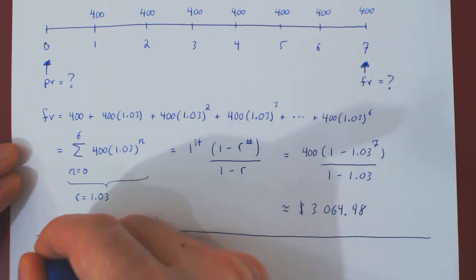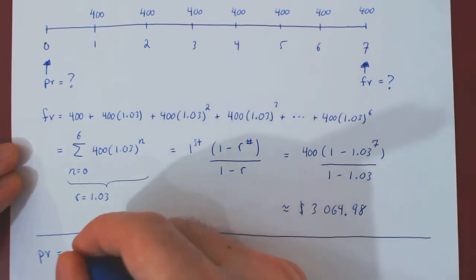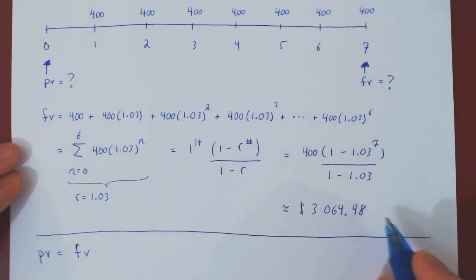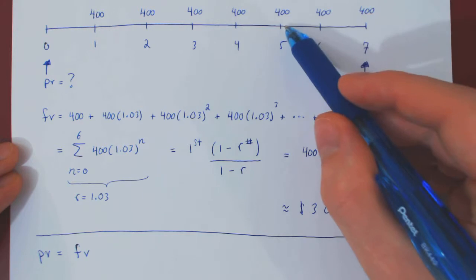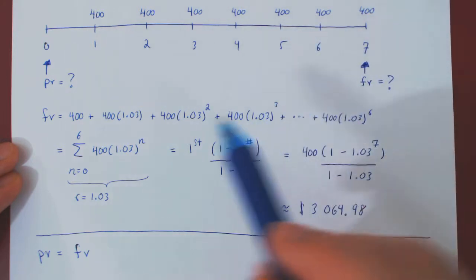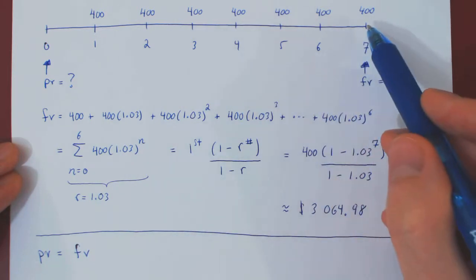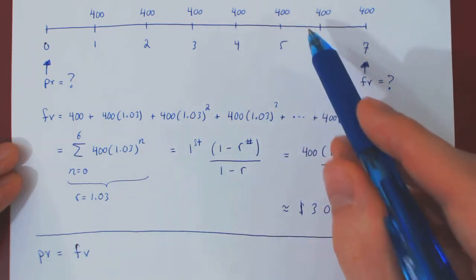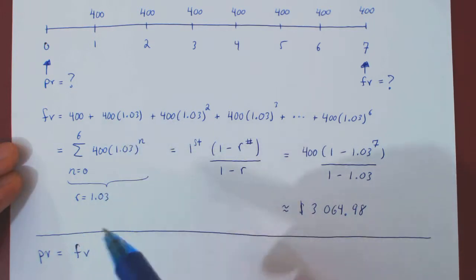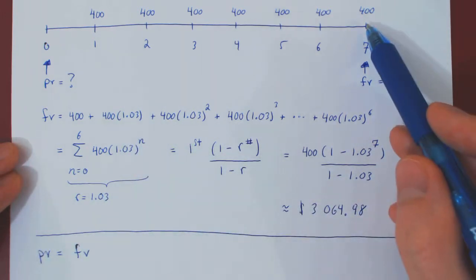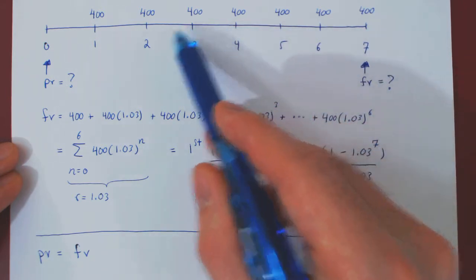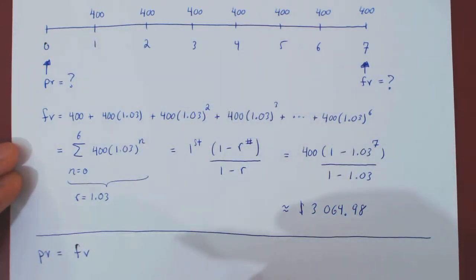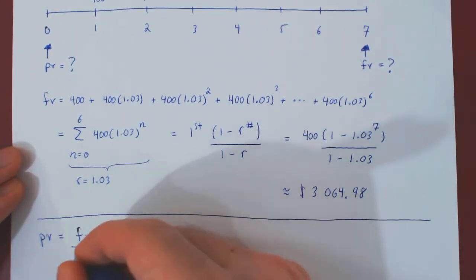So, the present value can be obtained from the final value, which we now have. And if you remember, when we move forward in time by one year, we multiply by 1.03. As we are moving backward in time by one year each step, we will divide each time by 1.03, as discussed in our previous video. So, the final value being here has to be brought back one, two, three, four, five, six, seven years. So, it must be divided by 1.03 seven times, therefore, 1.03 to the seven.